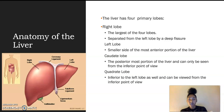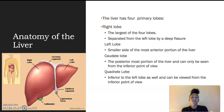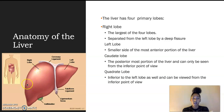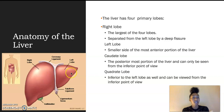The liver is found in the abdominal area of the body. Here we have the abdominal area, and here is where we'll find the liver. The liver has four primary lobes. The right lobe, which is here, is then separated by a deep fissure from the left lobe. Here's that deep fissure, and then we have the left lobe, which is the smaller portion of the liver on the anterior portion.